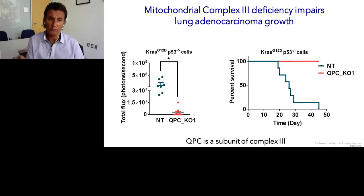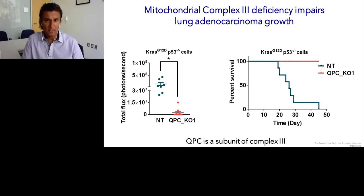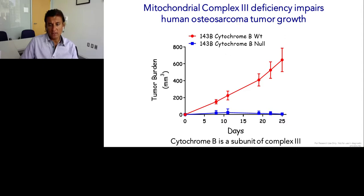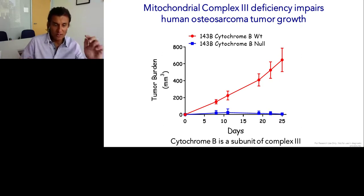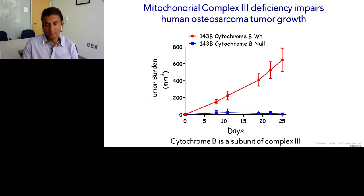We also took KRAS G12D oncogenic transformed lung adenocarcinoma cells harboring loss of p53 — the two main drivers of many lung adenocarcinomas — and used CRISPR to knock out complex 3. Again, you get markedly fewer tumors and the mice survive. Finally, a workhorse human osteosarcoma cell line harbors a mutation in cytochrome B, an essential subunit of complex 3. In vitro these cells can grow because we give them high glucose, glutamine, pyruvate, and uridine. They do fine in vitro but clearly make no tumors in vivo. So across almost three different models, if you inhibit the electron transport chain genetically by targeting complex 3, you barely get any tumors. The question is: why? What's so special?